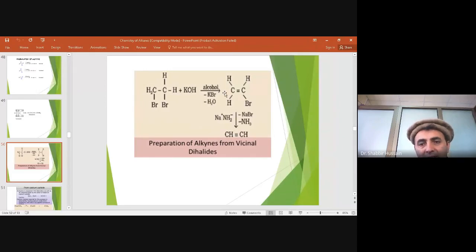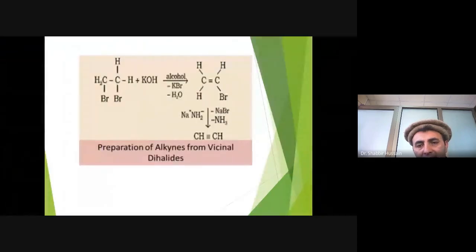In the first stage we are getting olefin halides, and when we use a base, sodium amide, it extracts a proton from the beta position. As a result, again elimination takes place with sodium bromide, and we are getting acetylene.